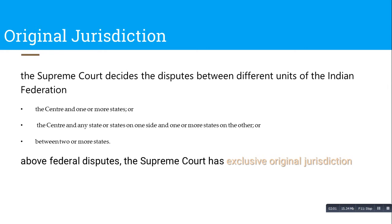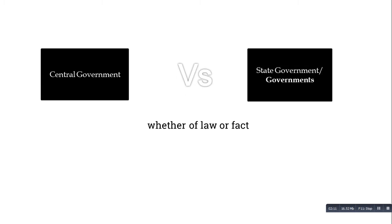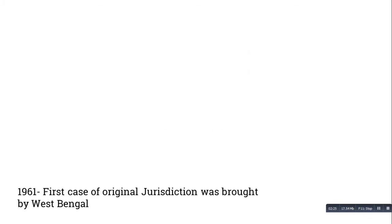Exclusive original jurisdiction means you cannot approach the High Court for these disputes — they come only under the Supreme Court. Federal disputes related to law or fact between the central government and state governments, or between state governments, come under the original jurisdiction of the Supreme Court. However, there are certain limitations on original jurisdiction. The first case of original jurisdiction was brought by West Bengal in 1961.